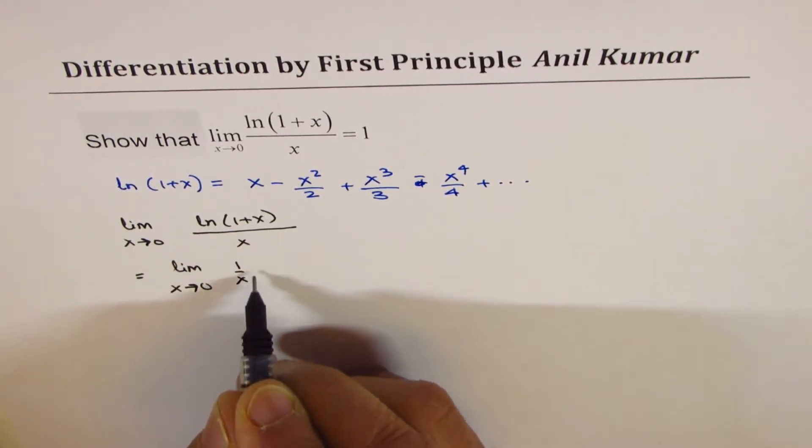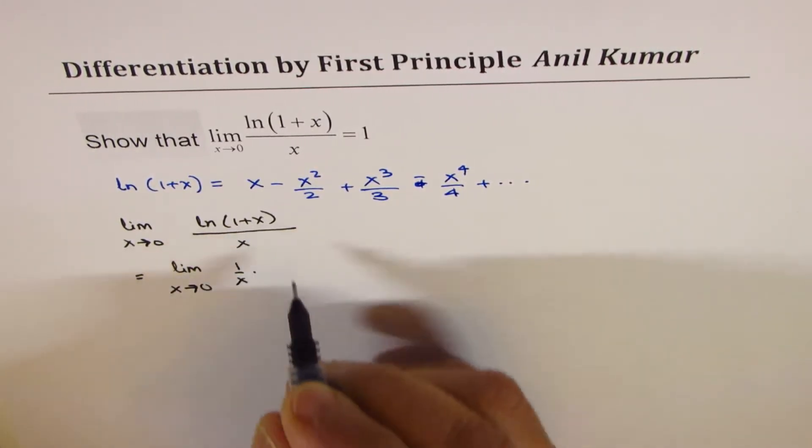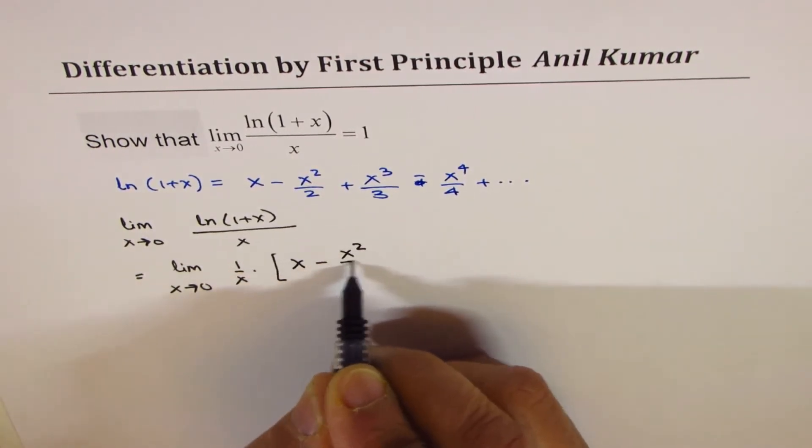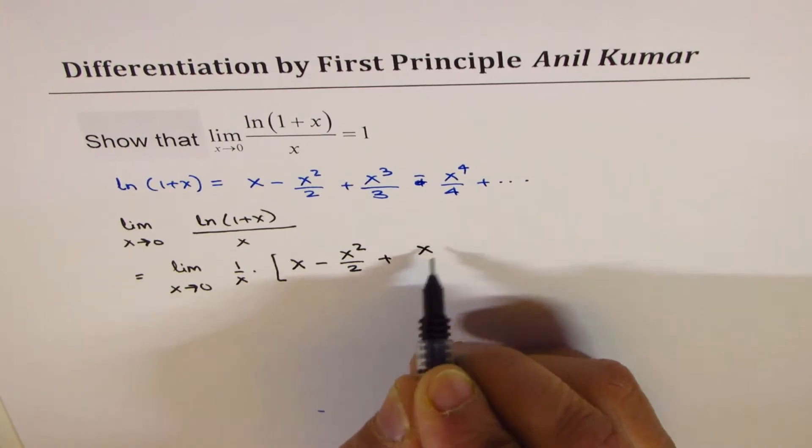Now 1 over x times the expansion of all this is x minus x squared over 2 plus x cubed over 3 minus x to the power of 4 plus so on.